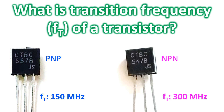Yesterday when I read about NPN transistor BC547B and the corresponding PNP transistor BC557B, I noted that the former had a typical transition frequency FT of 300 MHz and the latter had a typical transition frequency of 150 MHz. Now what is this transition frequency?